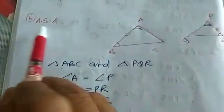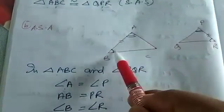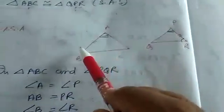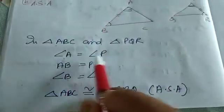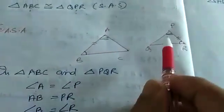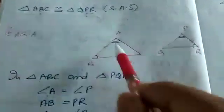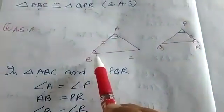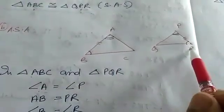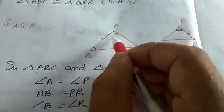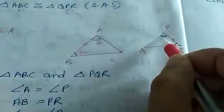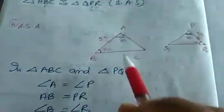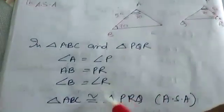Now let's see Angle-Side-Angle (ASA): two angles and one side in between them. In triangle ABC and triangle PQR, angle A equals angle P, side AB equals PR, and angle B equals angle R. Suppose this is 30 degrees and 70 degrees — the other triangle also has 30 and 70 degrees, and the side in between is 5 cm.